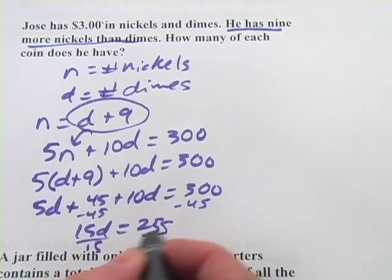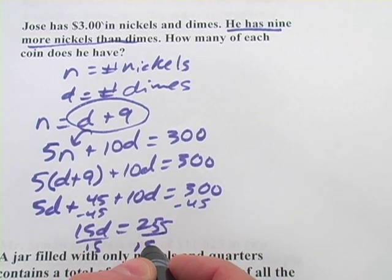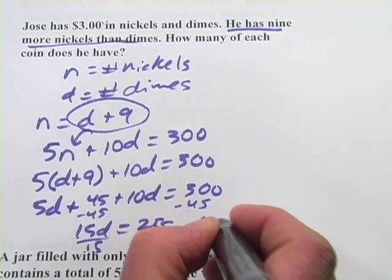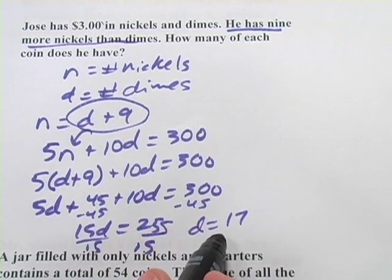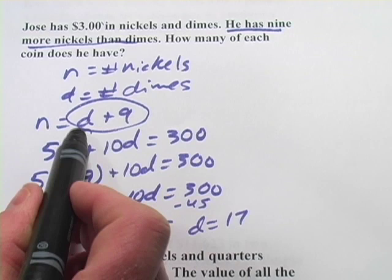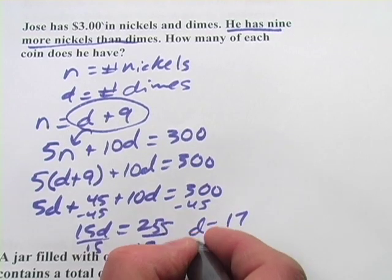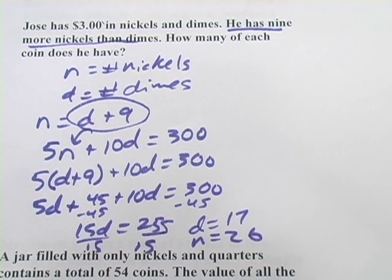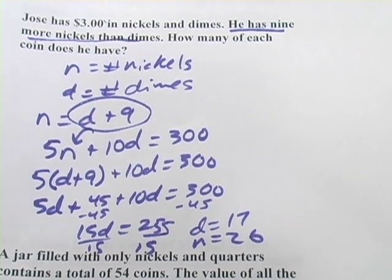We'll divide by fifteen, and I think we get seventeen for the number of dimes. Now when we want to find out the number of nickels, remember he's just got nine more, so we put seventeen plus nine, the number of nickels equals twenty-six. And we're done with that one. Let's try one more.